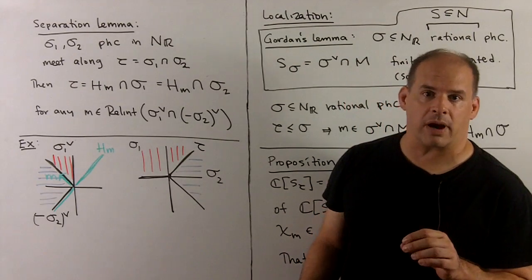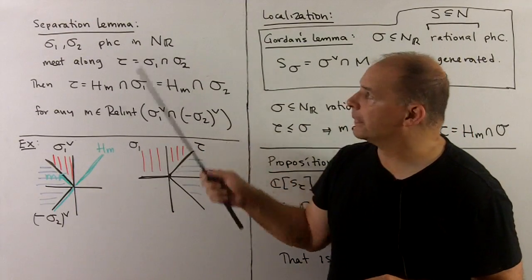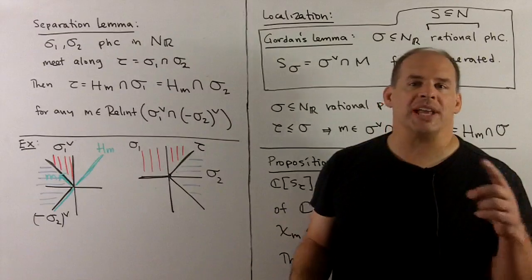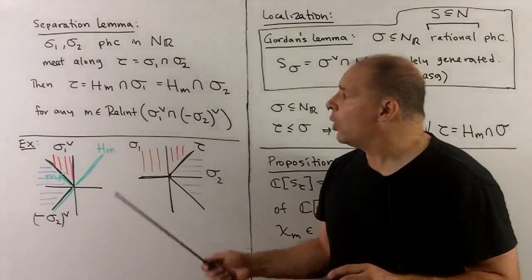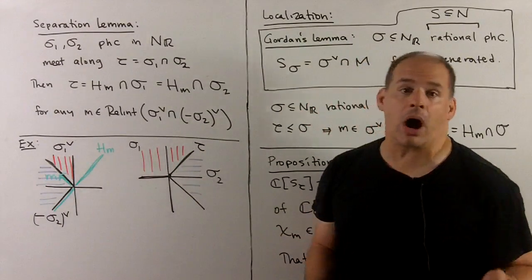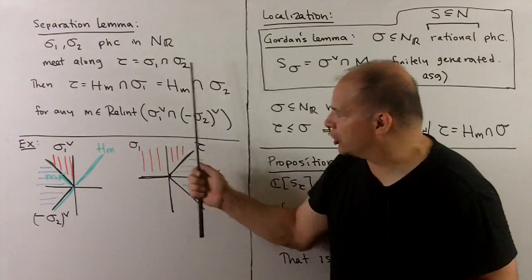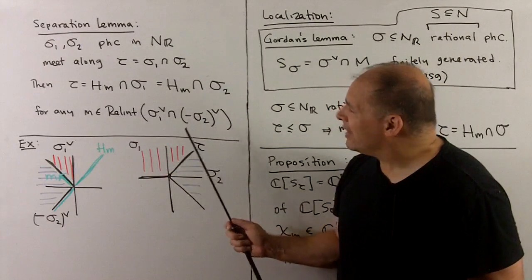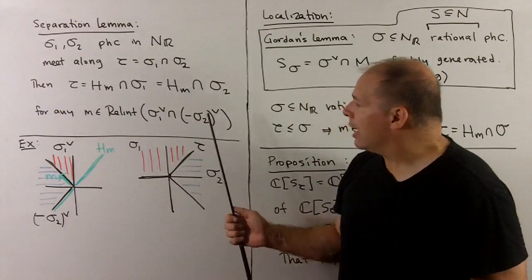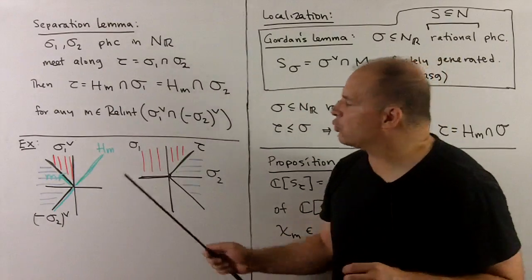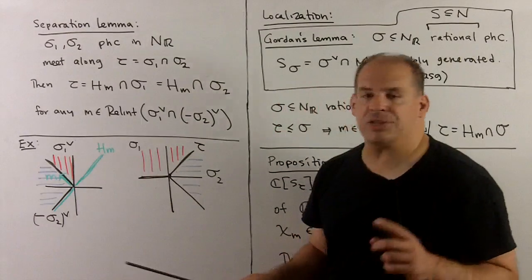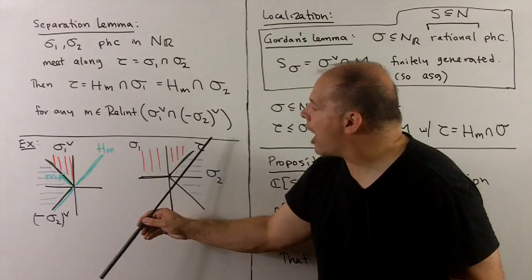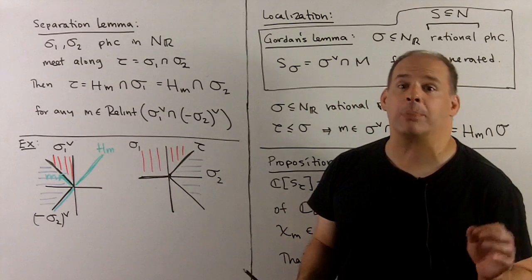We'll also need relative interiors for projective toric varieties, where we need the separation lemma. If sigma_1 and sigma_2 are polyhedral cones in N_R meeting along a common face tau, then we can represent tau as the intersection of either cone with a hyperplane H_m, where m is in the relative interior of sigma_1-check intersected with negative sigma_2-check in M_R. In the picture: sigma_1-check is shown in red, negative sigma_2-check in blue; their intersection is a ray pointing northwest, and taking any m in that relative interior gives H_m as a line whose intersection with either sigma_1 or sigma_2 recovers precisely tau.